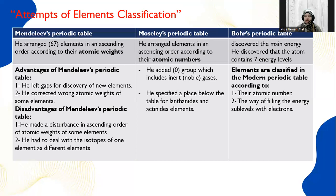The second scientist is Moseley. Moseley tried to arrange the elements in his periodic table according to their atomic number, not atomic weight like Mendeleev. The modifications he added include: number one, he added zero group or group 18, which contains the noble gases or inert gases. Two, he specified a place below his table for the elements of lanthanides and actinides.